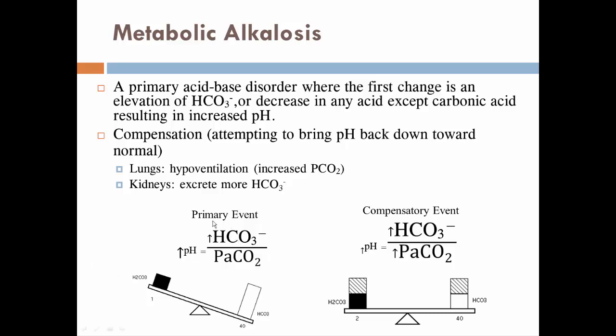In metabolic alkalosis, the problem is too many bicarbonates — adding them raises pH too high. To balance it, we increase CO2 by having the lungs hypoventilate, thereby increasing partial pressures of CO2. The kidneys can also help by not reabsorbing bicarbonates, effectively lowering bicarbonate levels. Both hypoventilation and renal excretion of bicarbonate are effective compensation mechanisms.